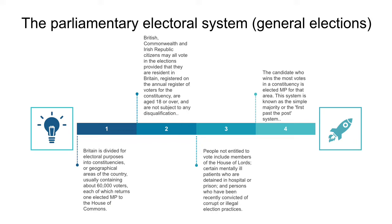The candidate who wins the most votes in a constituency is elected MP for that area. This system is known as a simple majority, or the first-past-the-post system.